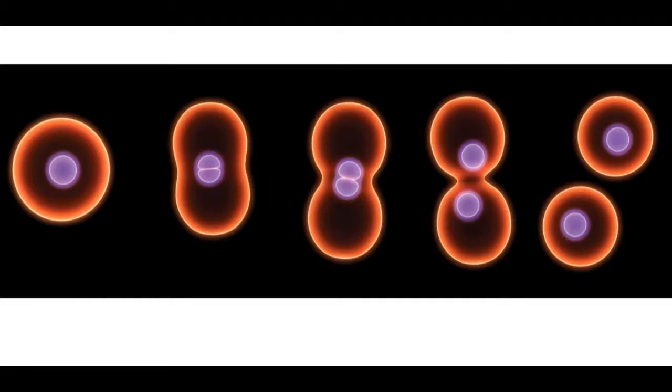Then that one cell divided into two cells that divided into two more. The cells divided again and again until pretty soon there were billions of cells. Your whole body is made up of these tiny building blocks.